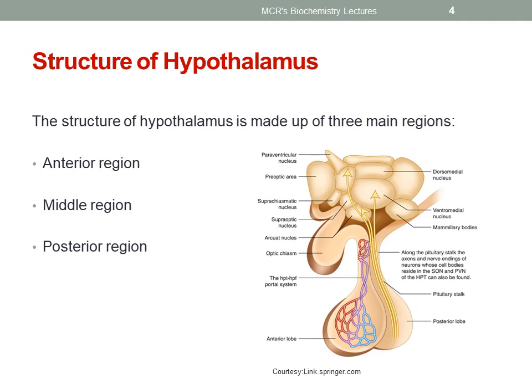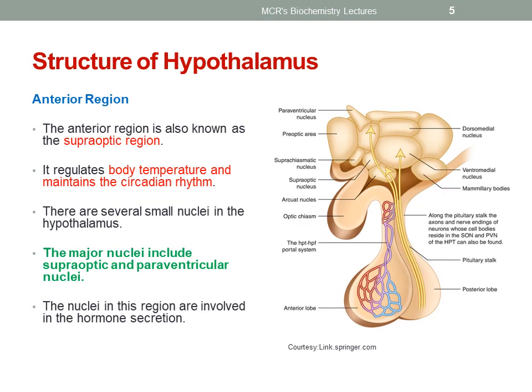Let's now learn about the structure of the hypothalamus. It is made up of three main regions: the anterior, middle and posterior region. The anterior region is also known as the supra-optic region and it regulates body temperature and maintains the circadian rhythm. There are several small nuclei in the hypothalamus; the major ones include supra-optic and para-ventricular nuclei, which are involved in hormone secretion.